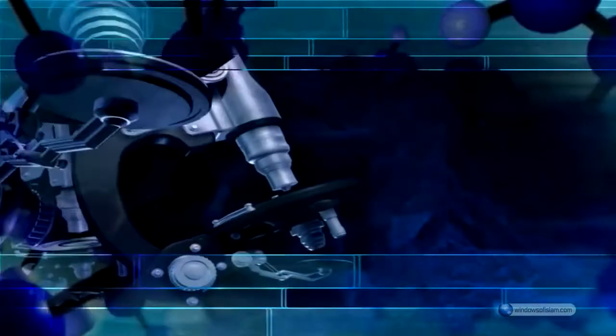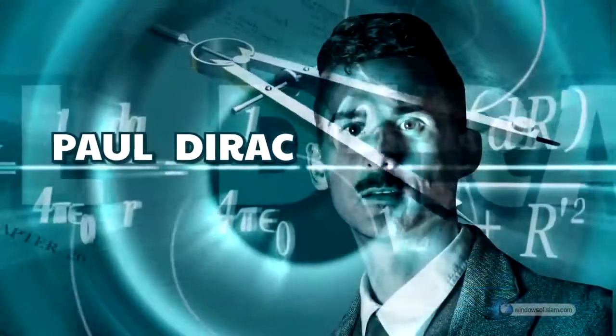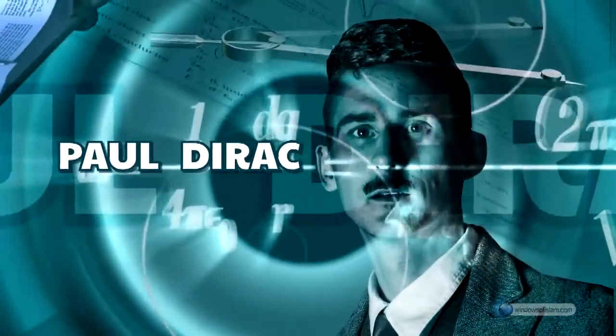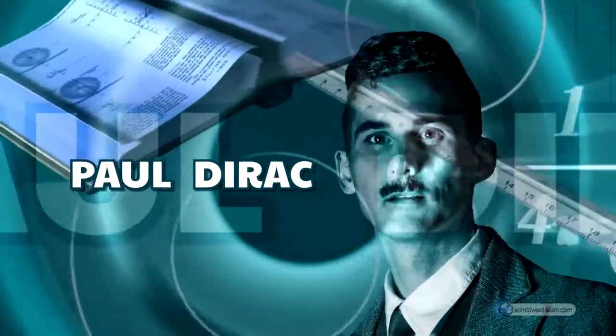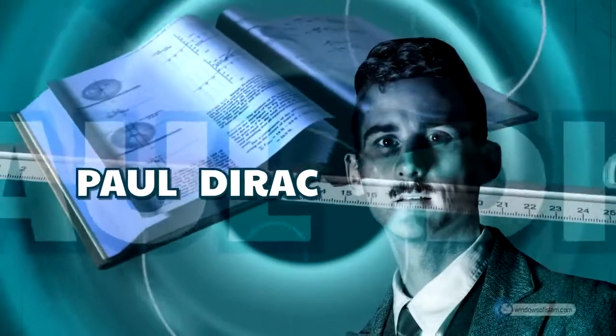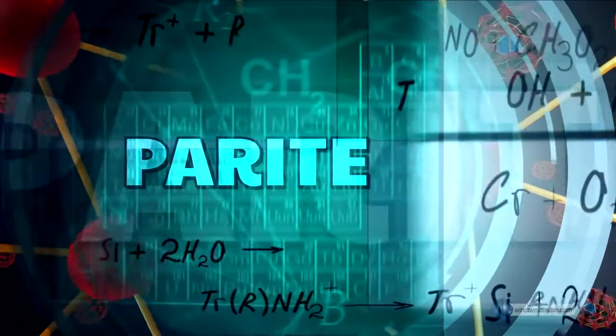The creation of matter in pairs is one of the most important discoveries of physics. Paul Dirac, a British scientist, was awarded the Nobel Prize in 1933 for his discovery in this field. The discovery of Dirac is known as parity, and thanks to this discovery, it has been presented that matter has a pair called anti-matter.